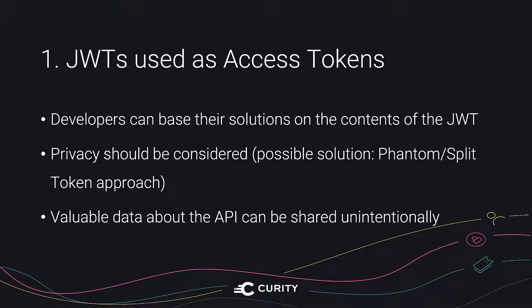Developers can base their solutions on the data which is inside of the JWT. If you decide to introduce breaking changes — for example, you remove a field — this can cause many integrating apps to stop working. As anyone can read what is inside the token, privacy should be taken into account. If you want to put sensitive data or personally identifiable information in the token, remember that anyone can decode the token and access this data. If such information can't be removed from the token, you should consider switching to either the phantom token approach or the split token approach, where opaque tokens are issued to the client, but they are then exchanged for JWTs which can be consumed by the API. In these approaches, the client never has access to the JWT, so they can't read the sensitive data.